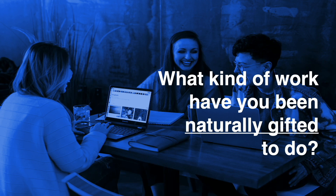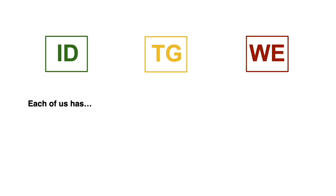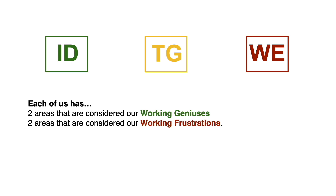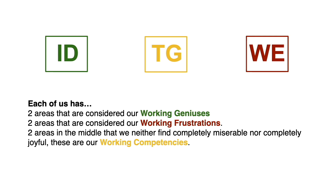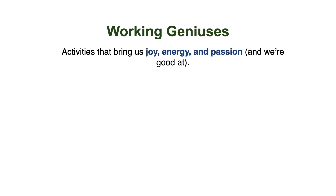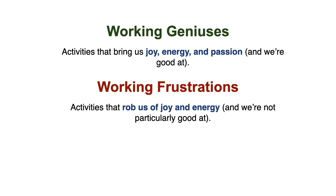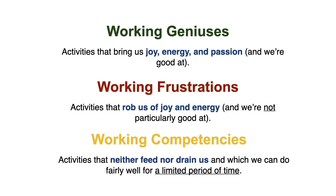The question is, what kind of work have you been naturally gifted to do? Each of us has two areas considered our working geniuses — represented in green — and two areas considered our working frustrations — represented in red — and two areas in the middle that are our working competencies, represented in gold. Working geniuses are the activities that bring us joy, energy, and passion, and we're good at. Working frustrations rob us of joy and energy, and we're not particularly good at them. Working competencies are activities that neither feed nor drain us, and we can do them fairly well but for a limited period of time.